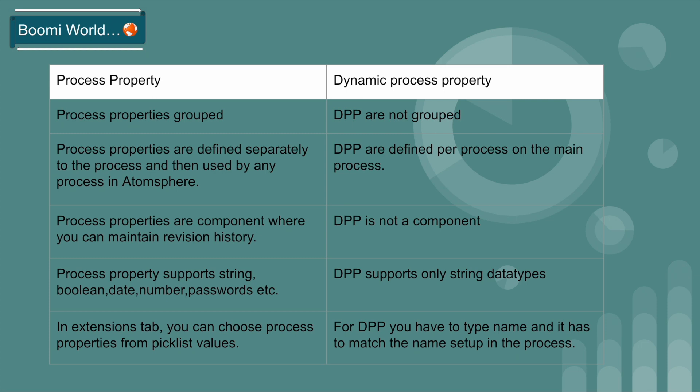Process properties are defined separately from the process and can be used by any process in the atom sphere. Dynamic process properties are defined per process on the main process.